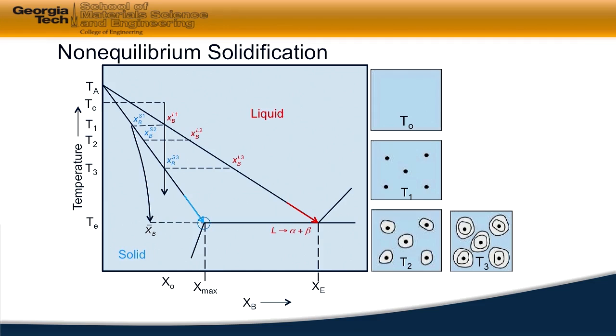Because diffusion is so slow in the solid, we're effectively saying it's zero, and what that means is that the material being solidified actually lags behind the actual composition that we would have seen if we cooled under equilibrium conditions.